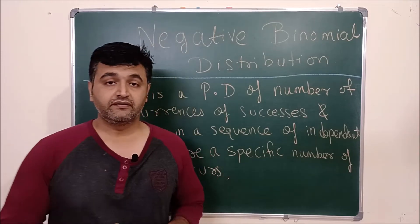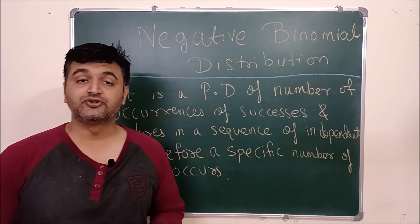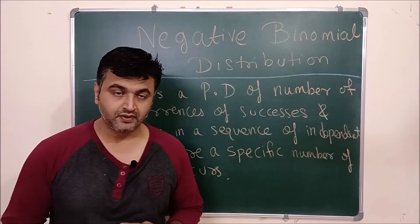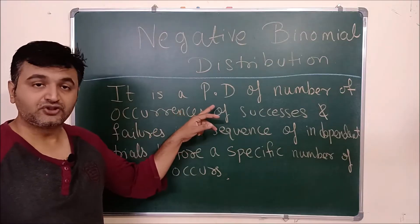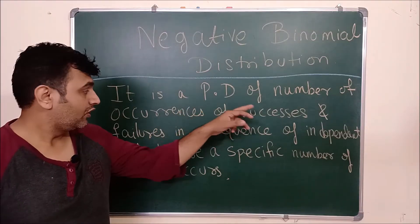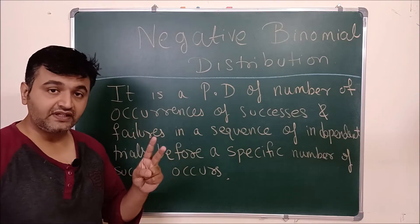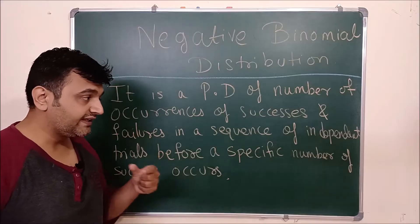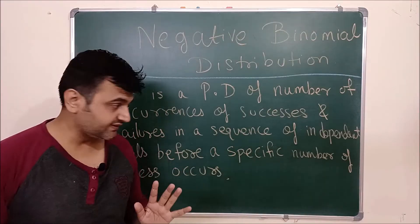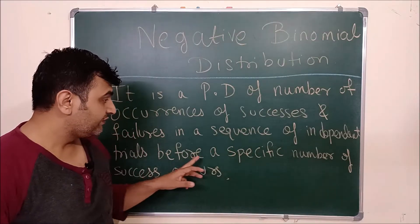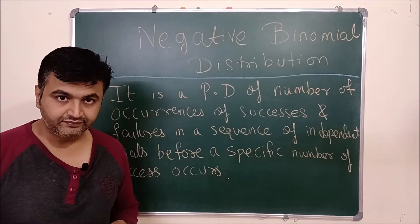Today we are going to talk about negative binomial distribution. It is a probability distribution of the number of occurrences of successes and failures in a sequence of independent trials before a specific number of successes occurs.